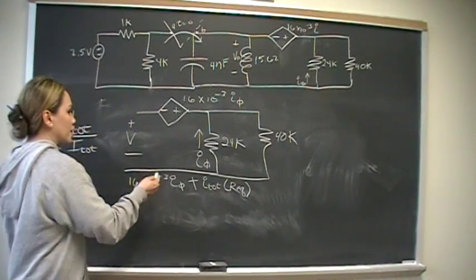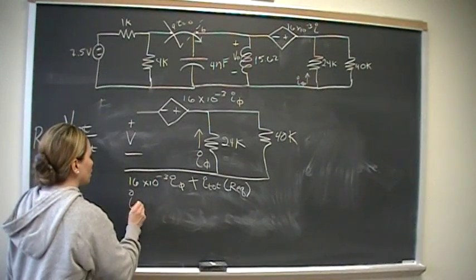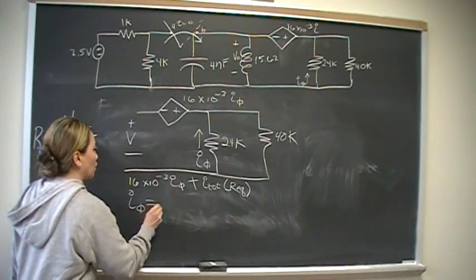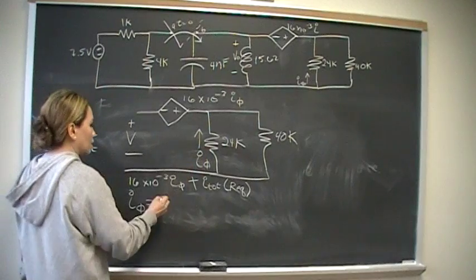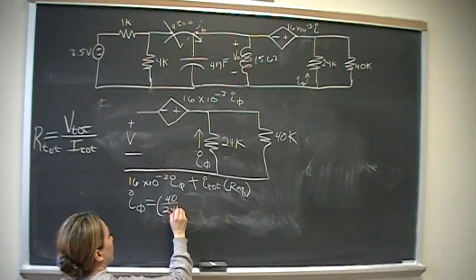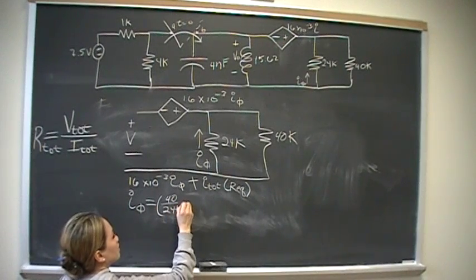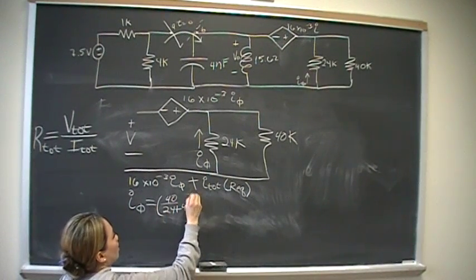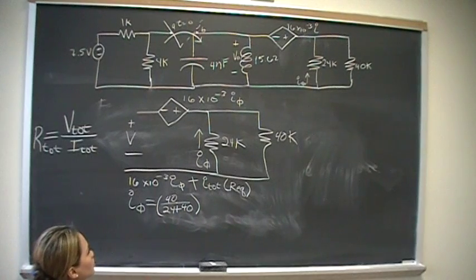So current division says that I sub V will equal 40K over 24K plus 40K. That's what current division says.